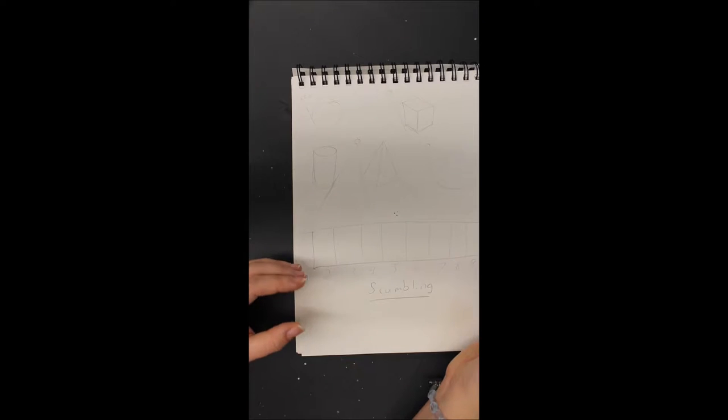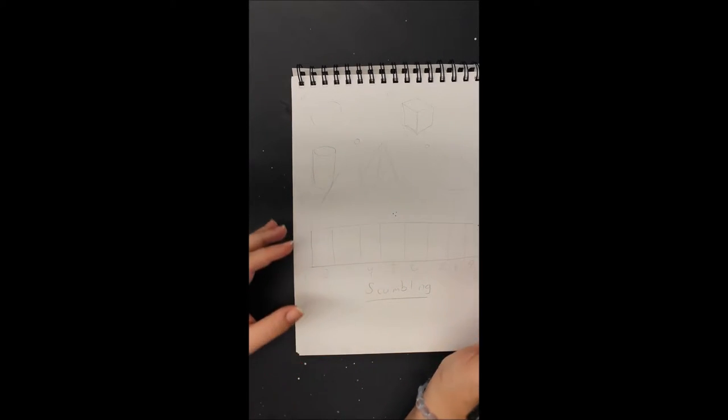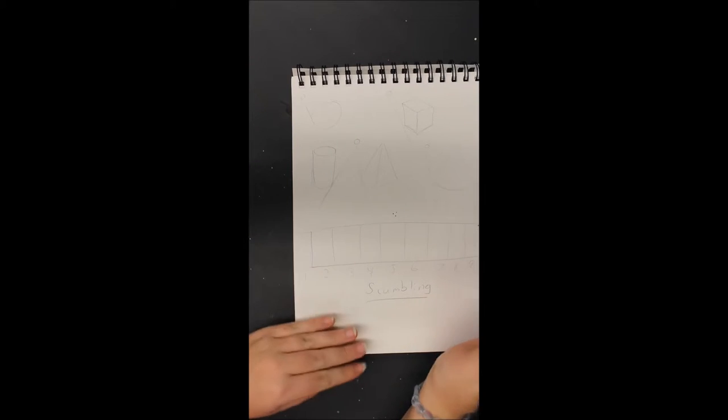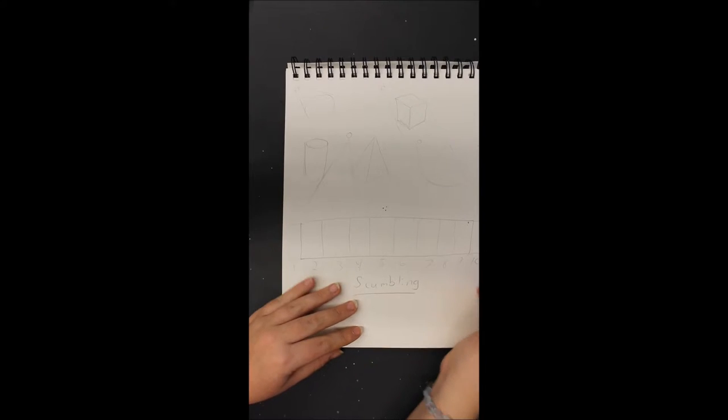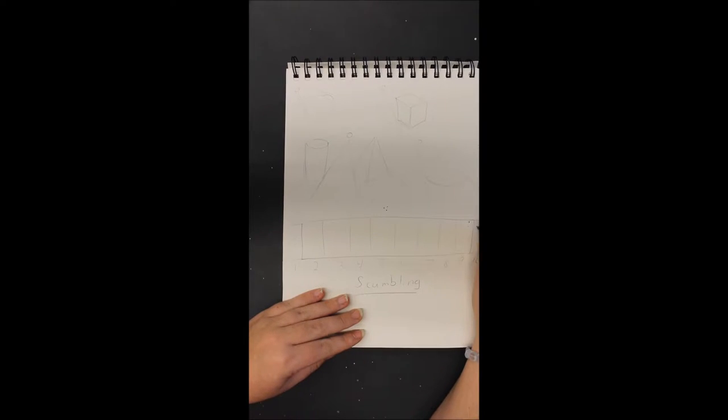I have a few dots here that were left over from my stippling page on the other side, so just be aware of that. So the idea of scumbling, it's almost like scribbling but it's scribbling with intent. So I'm going to start by filling in the ten spot, the most shaded, and I'm just going to make scribbly lines but I'm doing it in an intentional way to fill in that space.